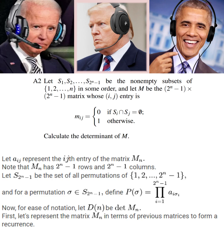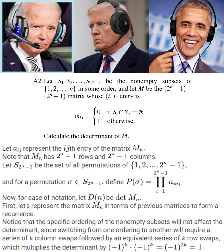Hey Sleepy Joe, wouldn't that change the value of the determinant? It won't affect the determinant, since switching from one ordering to another will require a series of K column swaps, followed by an equivalent series of K row swaps, which multiplies the determinant by negative 1 to the power of 2K, which is just 1. You should have paid more attention in your linear algebra class instead of looking at Bokita-Fanart.